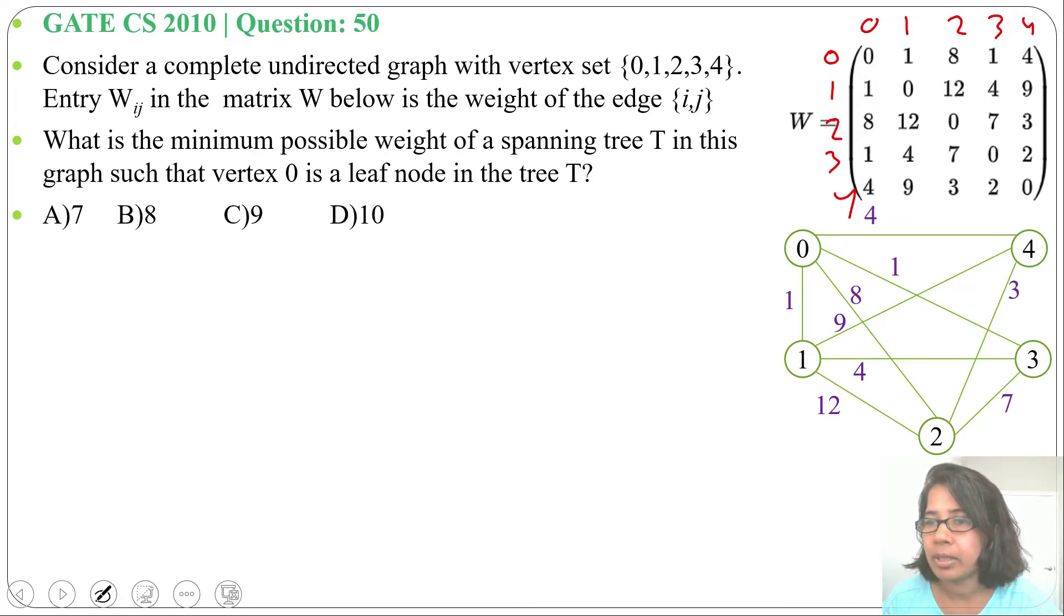Next for vertex 3, from vertex 3 to vertex 4 weight is 2. For vertex 4, already done. Now we've created the graph. From this graph we will find the spanning tree, but here a condition is given: vertex 0 is a leaf node in the spanning tree.